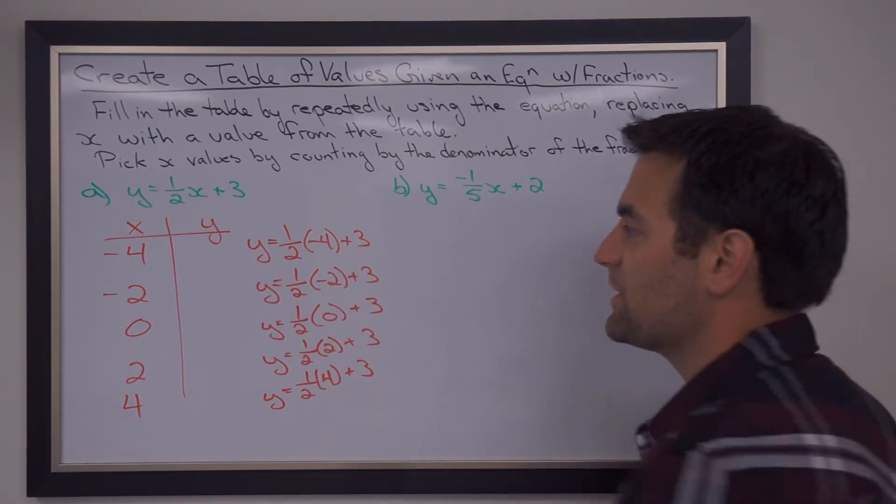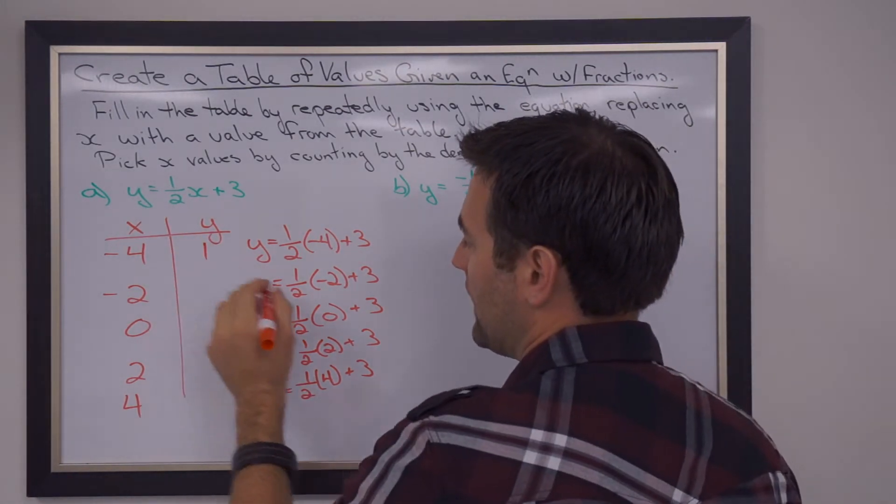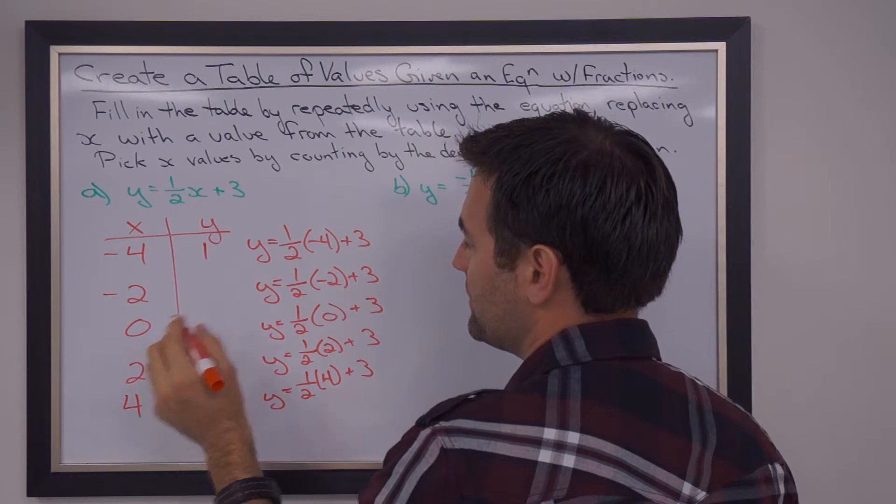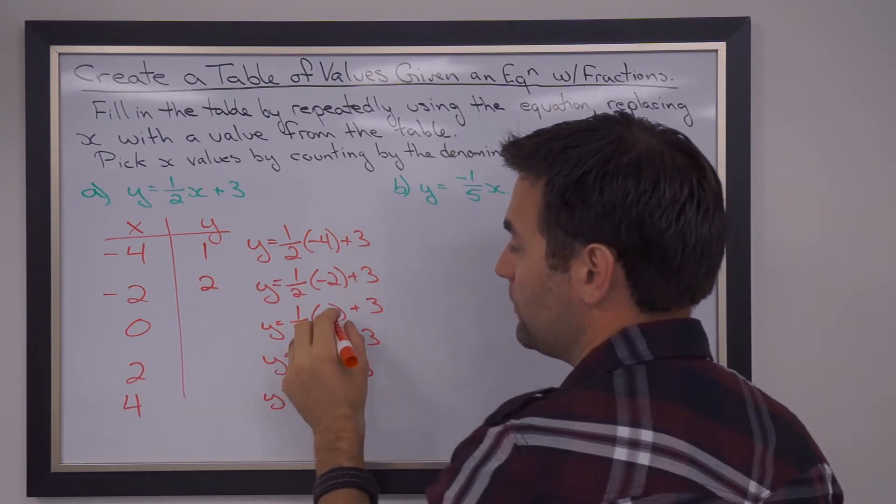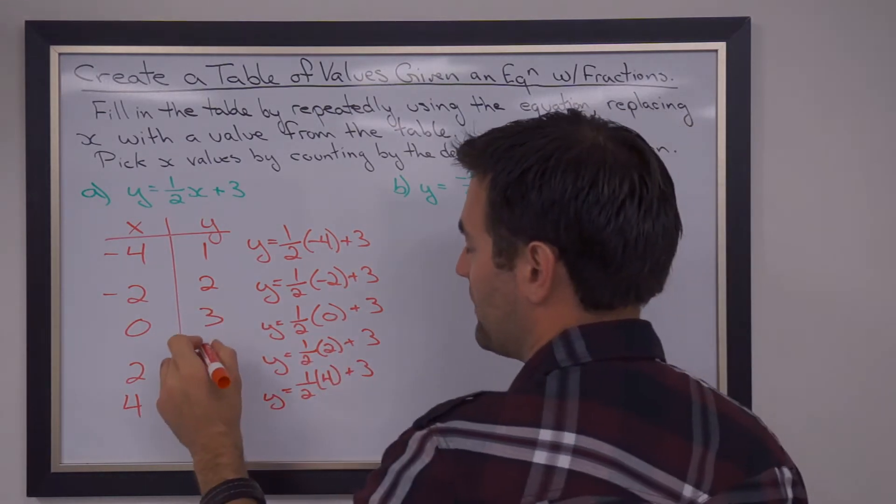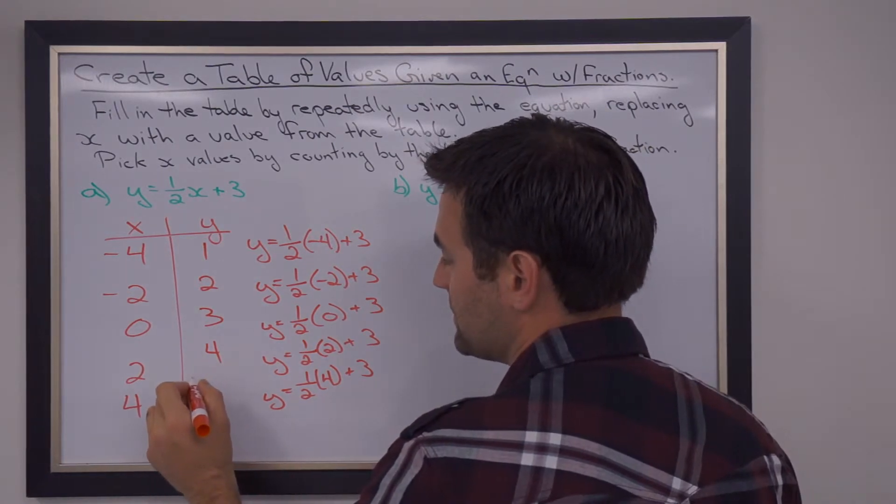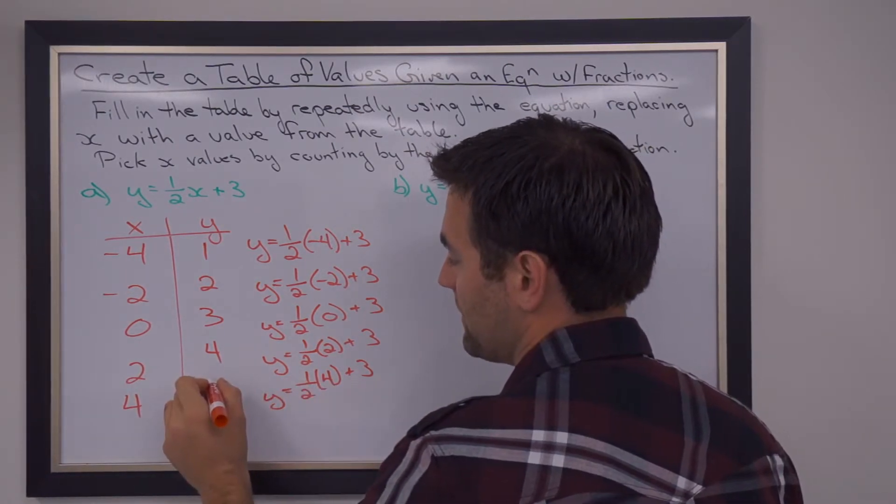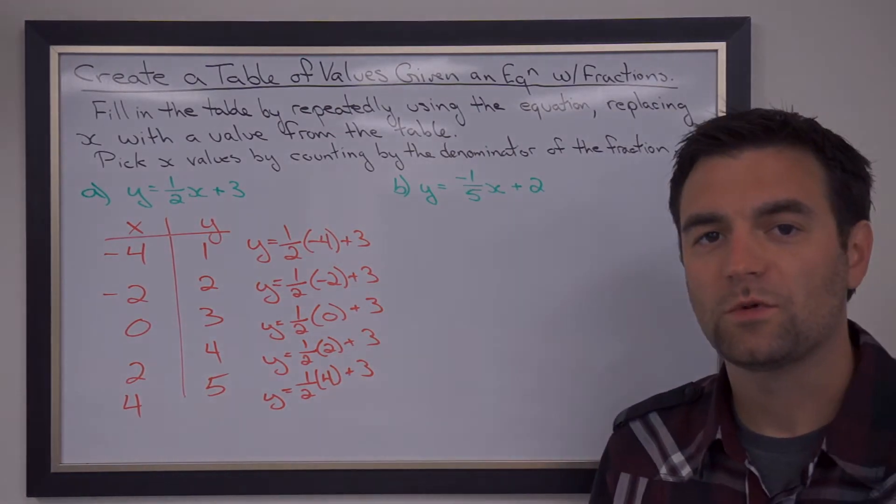And we calculate each of those out to get our corresponding y-value. So we have negative 2 plus 3, that's 1. Moving on, we'll have negative 1 plus 3, which is 2. And then we'll have 0 plus 3, 1 plus 3, and 2 plus 3. So 1, 2, 3, 4, and 5 are the corresponding y-values.